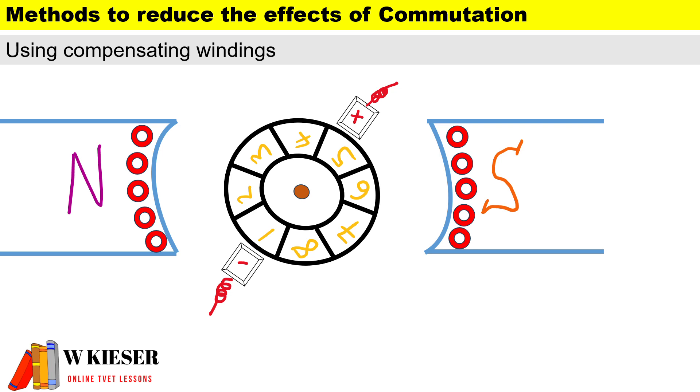Finally, we can use compensating windings, which brings us to our example today. Compensating windings are windings slotted inside the pole shoes, and the current through the compensating windings is connected in series to the armature conductors.